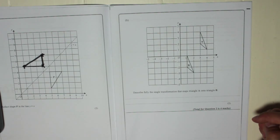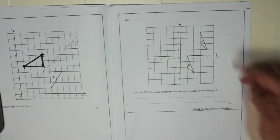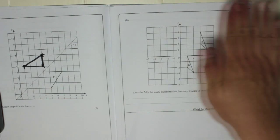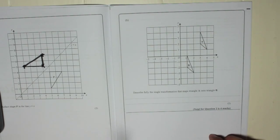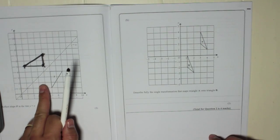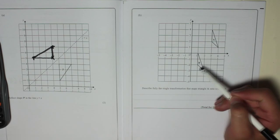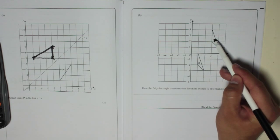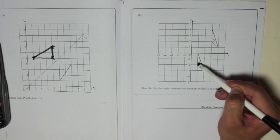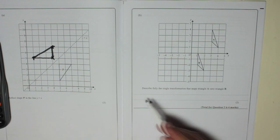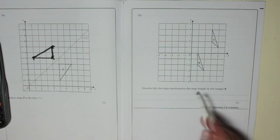You've got translation, which means a has been moved left or right up and down, or you've got reflection, like we just did in the last question. This is obviously translation because they're in the same orientation. They're both pointing upwards, so that has moved to there, and you've got to describe that.